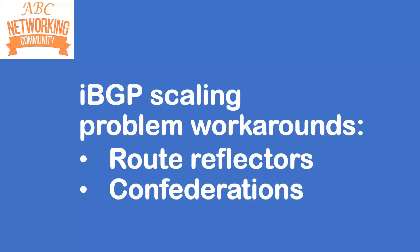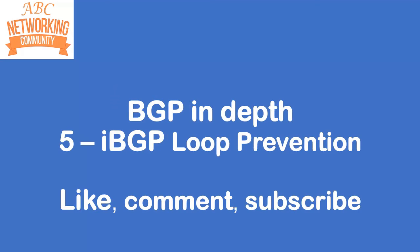But that isn't the end of the story — there are workarounds to solve this IBGP scaling problem. One workaround is to employ route reflectors in your network, and another is to use confederations. Route reflectors are getting a lot of attention at the moment, especially within data center spine-and-leaf networks. In my next video I'll be talking about route reflectors. Please join me then, and if you liked what you saw here, please like, comment, and subscribe. Thanks for watching — I'm Joe Neville, goodbye.